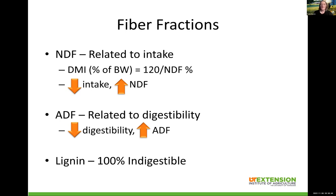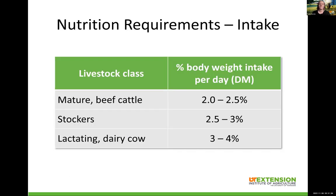ADF — acid detergent fiber — is related to digestibility. Similar to NDF, as ADF increases, digestibility decreases. And lignin is 100% indigestible and starts to tie up the nutrients in the plant. As a reminder, different classes of animals have different requirements. Stocker calves are growing faster and will consume more — we're looking at two and a half to three percent of body weight. A lactating dairy cow can eat three to four percent of her body weight. That amount consumed is relative to their body weight and their growth rate or stage of production.